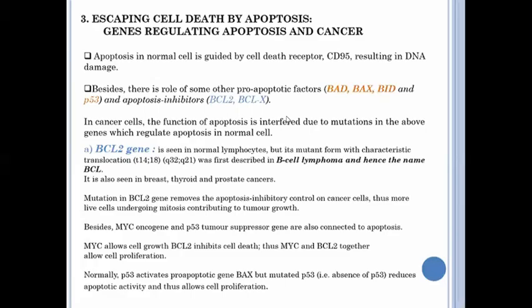The mutation in the BCL2 gene removes the apoptosis inhibitory control on the cancer cells and they will cause the cells to undergo mitosis, contributing to tumor growth. Besides, the MYC oncogenes and the p53 tumor suppressor genes are also connected to apoptosis. The MYC allows cell growth while BCL2 inhibits cell death. So the MYC and BCL2 together allow cell proliferation.